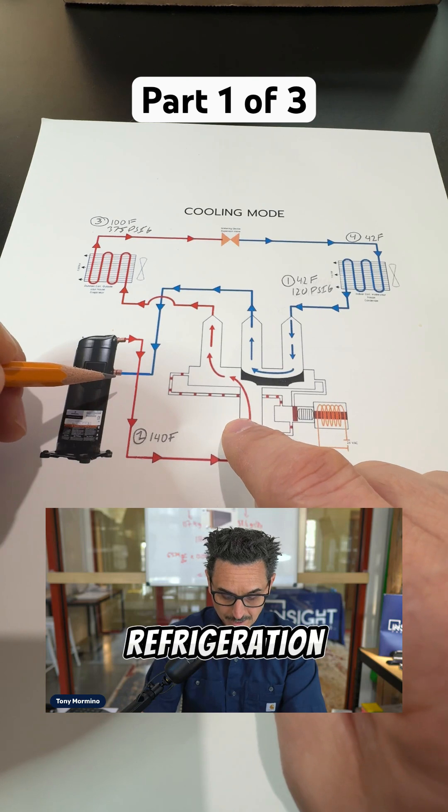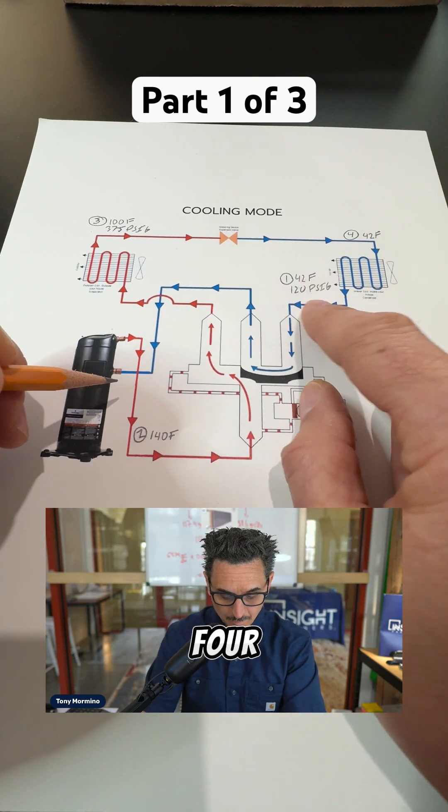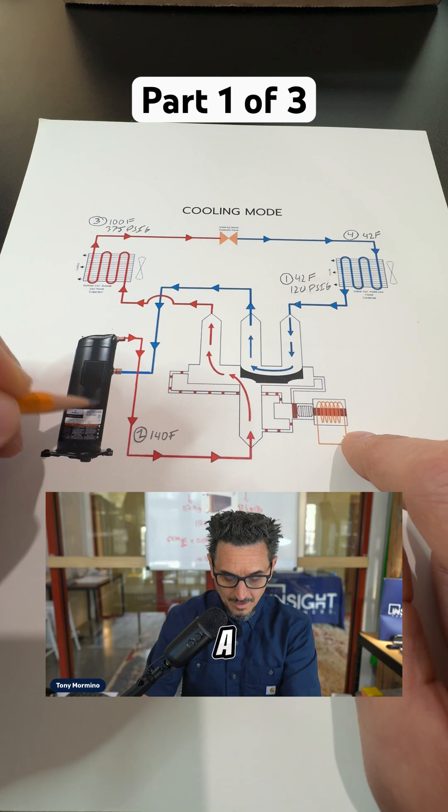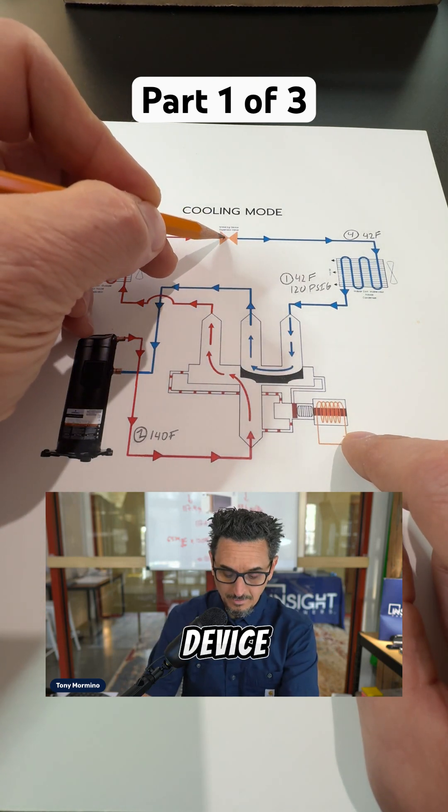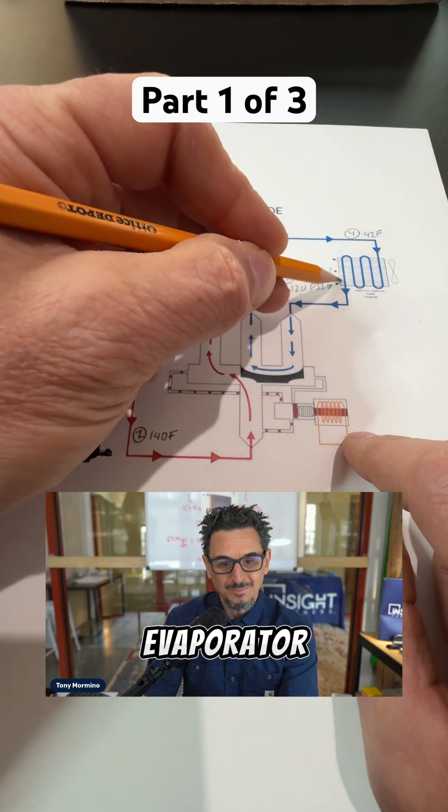Every refrigeration cycle has the following four components: a compressor, a condenser, a TXV or pressure drop device, and an evaporator.